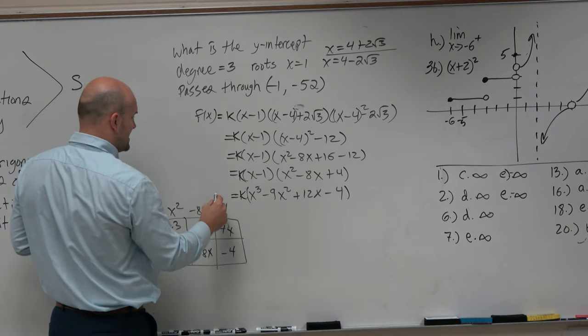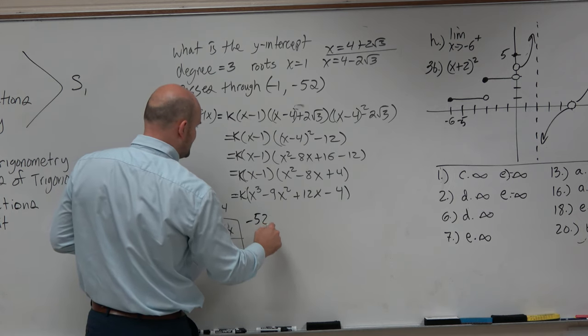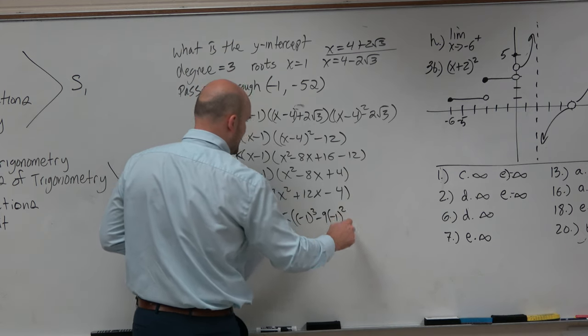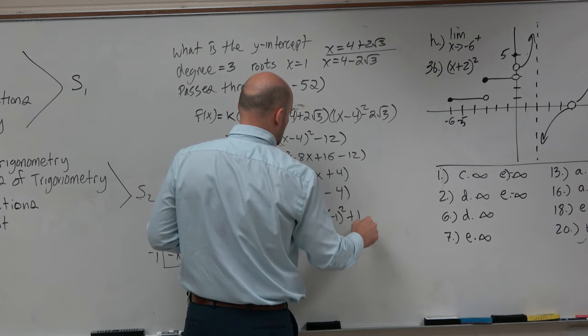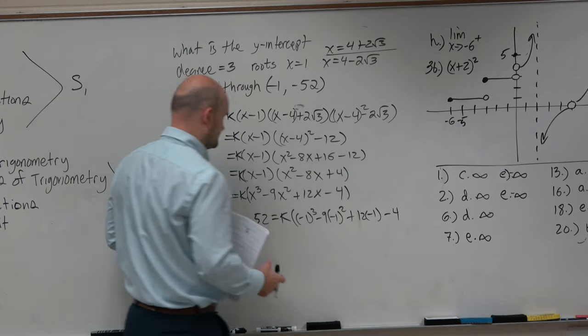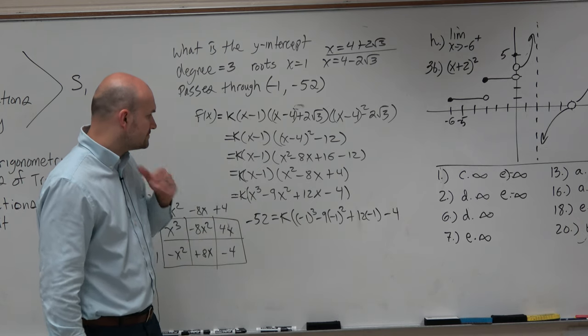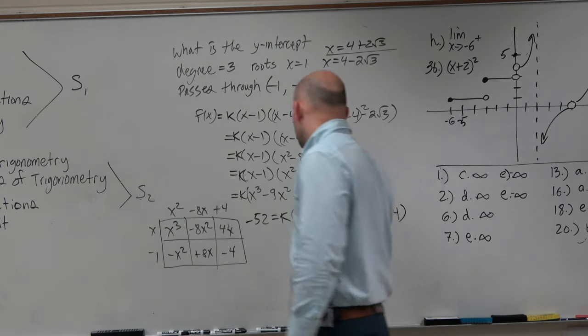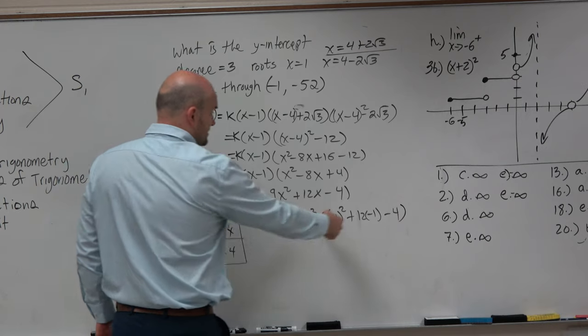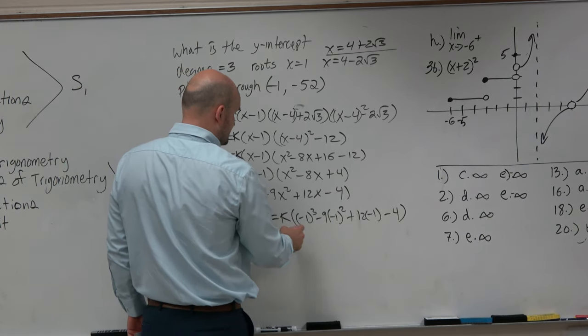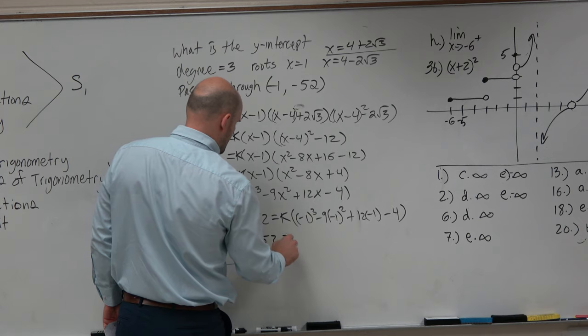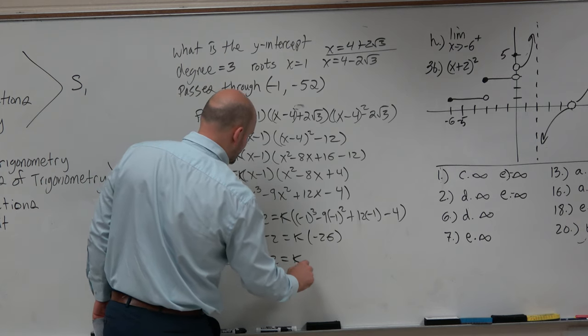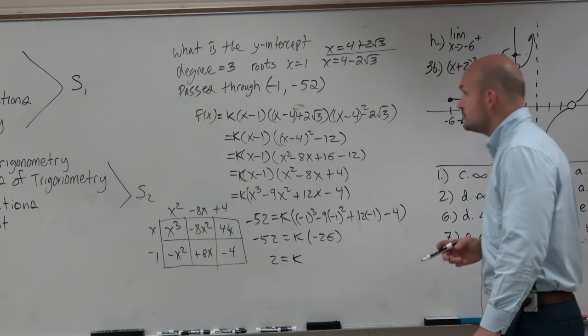And basically what that means is we can say, negative 52 is equal to k times negative 1 cubed minus 9 times negative 1 squared plus 12 times negative 1 minus 4. And when we do our math here, it equals negative 26. I'm going to assume your math is correct. So k is equal to 2.